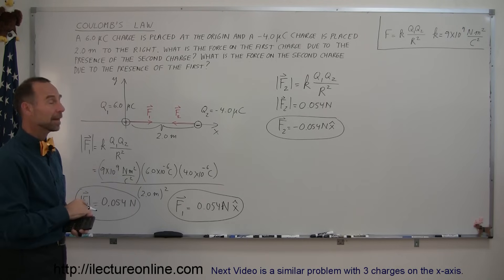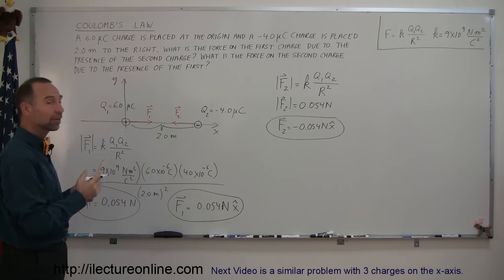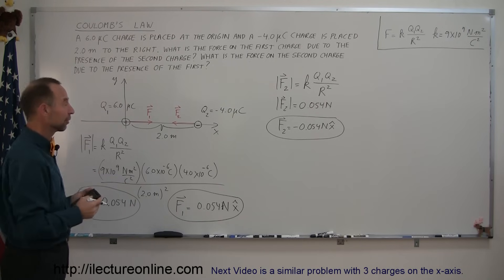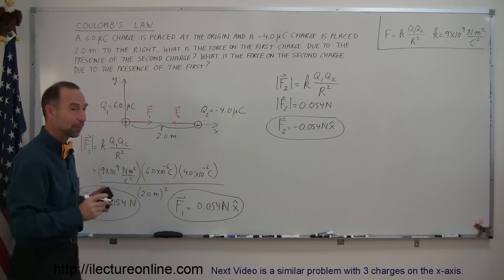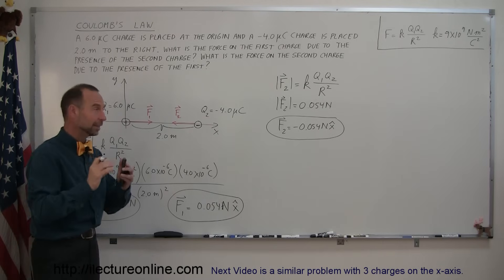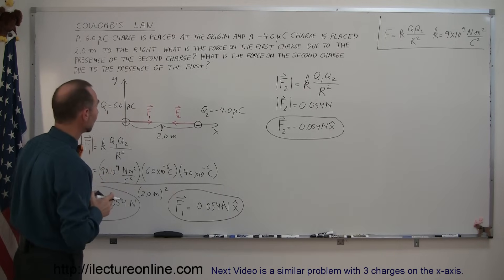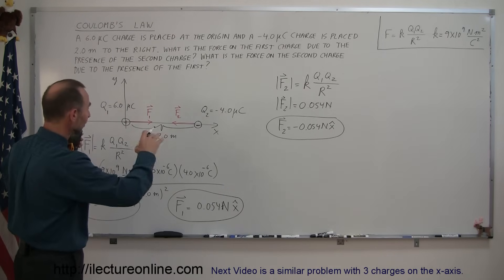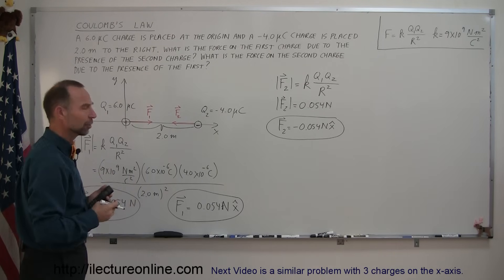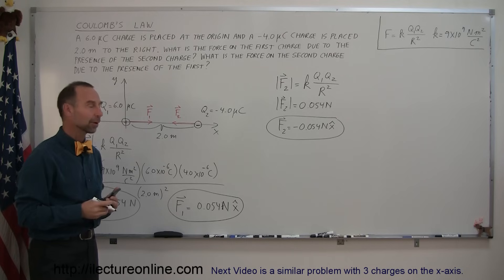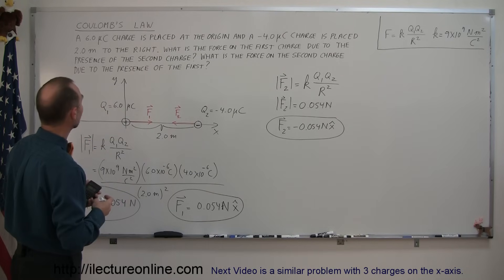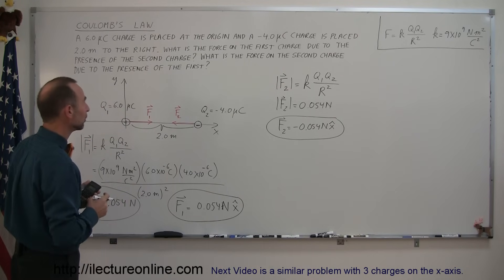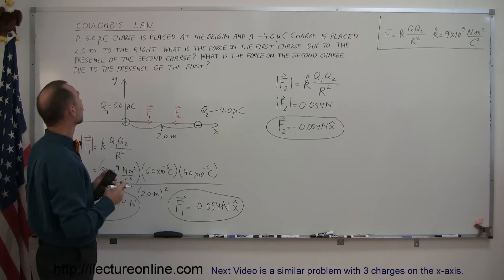That's how you do this. This is a simple example; things get a little more difficult when we start putting charges in different places, not on a single line. I'll show you some more examples where things get more complex. That's how you deal with Coulomb's law.